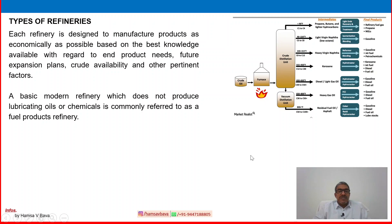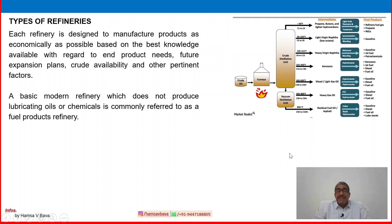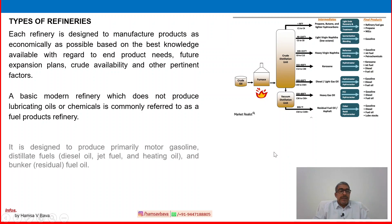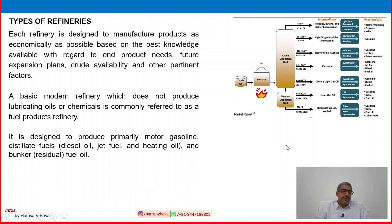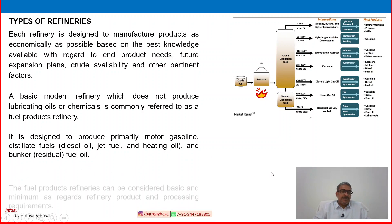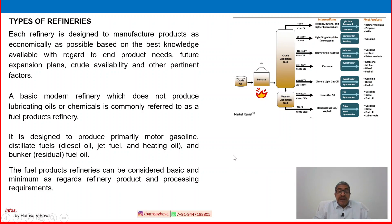A basic modern refinery which does not produce lubricating oil or chemicals is commonly referred to as a fuel products refinery. The fuel products include propane, LPG, gasoline, jet fuel, diesel, etc. These are the major products that basic refineries produce. A basic refinery is designed to produce primarily motor gasoline, distillate fuel, diesel oil, jet fuel, heating oil, bunker fuel oil, and heavy residual fuel oil. Fuel products refineries can be considered basic and minimum as regards refinery product and processing requirements.